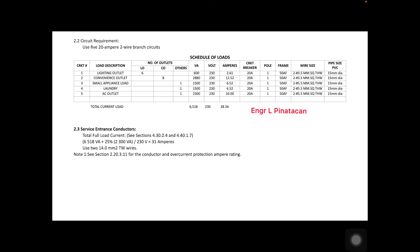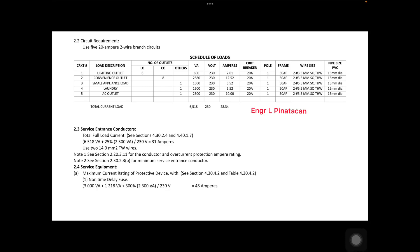We verify the conductor and overcurrent protection per section 2.20.3.11, and the minimum service entrance conductor per section 2.30.2.3.B of PEC 2017. Next, we check the service equipment and determine the maximum current rating of the protective device, referencing section 4.30.4.2 and table 4.30.4.2.